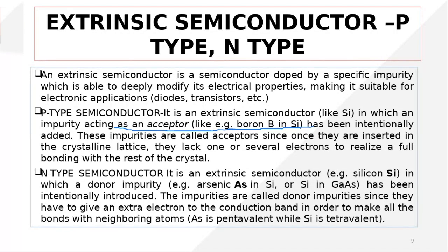When we add donor impurity — a pentavalent impurity — to silicon, there is an extra electron. That extra electron is donated to the crystal from its atom or orbit, which is why this impurity is named donor impurity. This electron is donated from the impurity atom to the conduction band, so conductivity increases due to the presence of these electrons. These are the p-type and n-type, which are the extrinsic semiconductors.